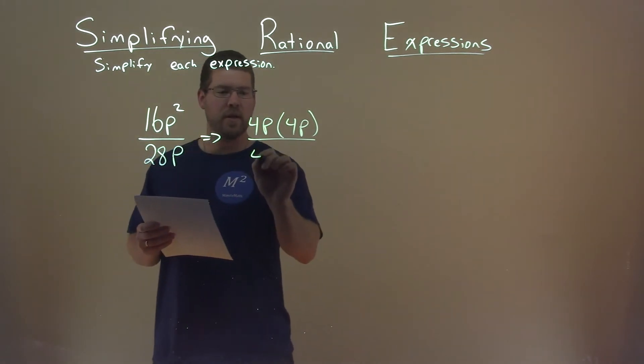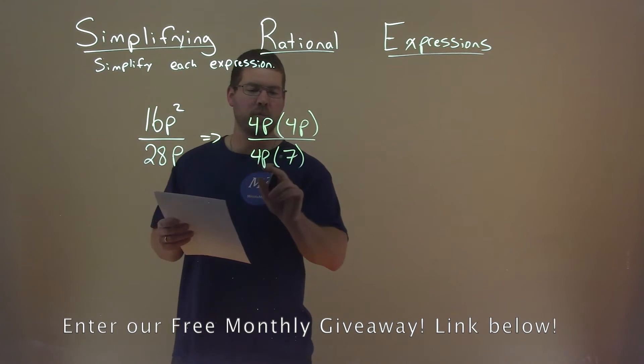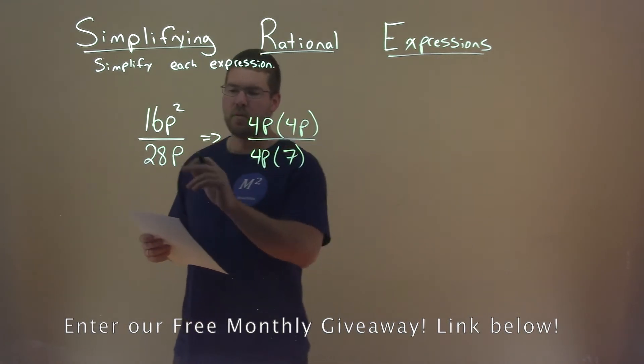Pull out a 4p from the denominator, and I'm left with 7. 4p times 7 is 28p.